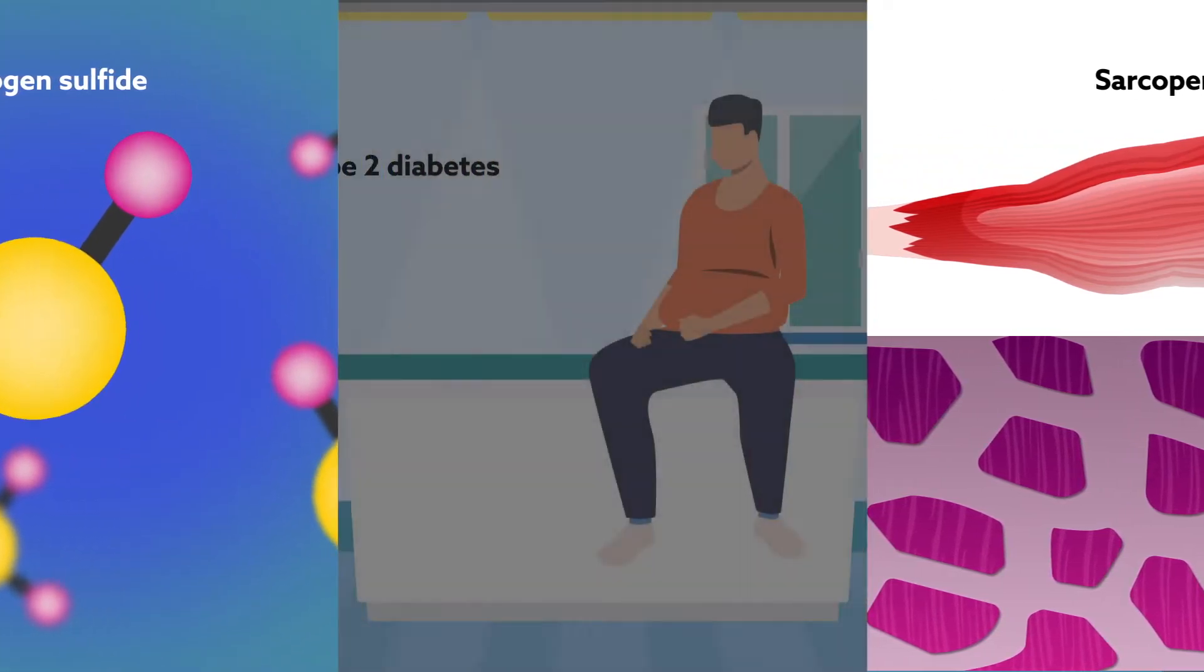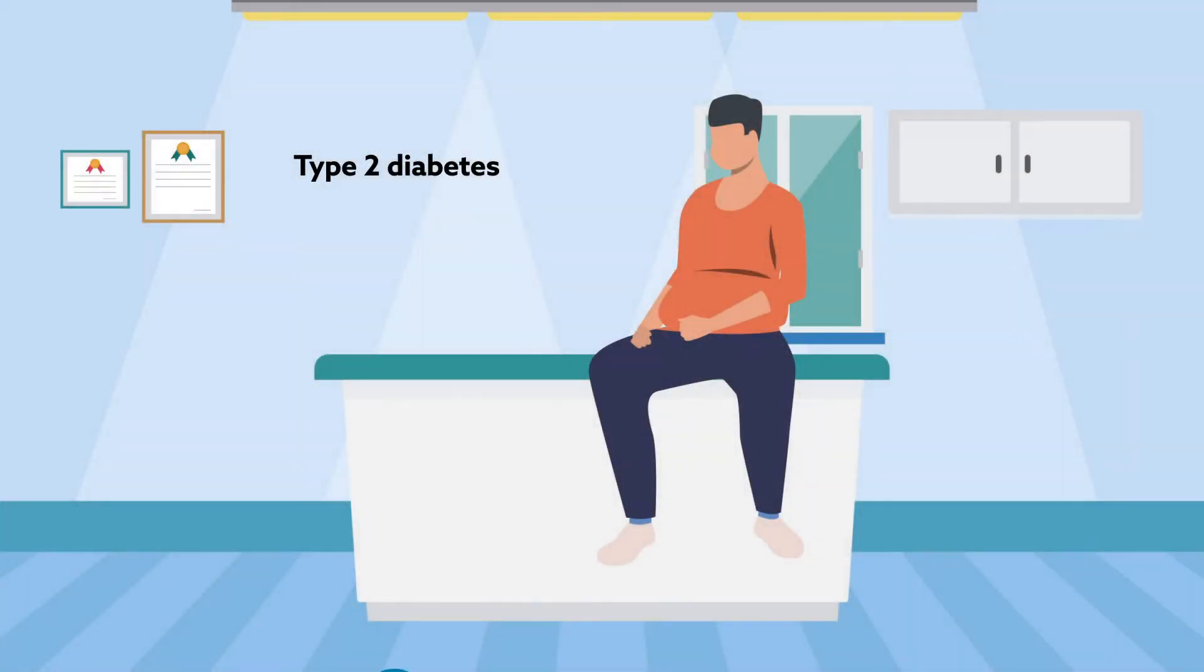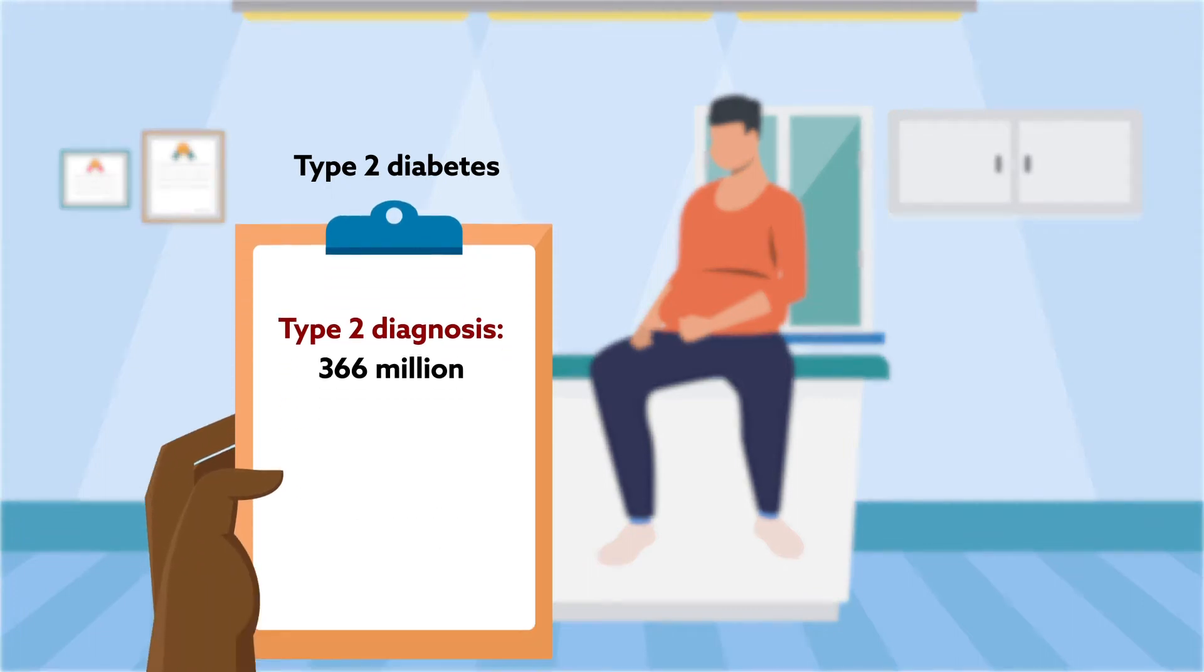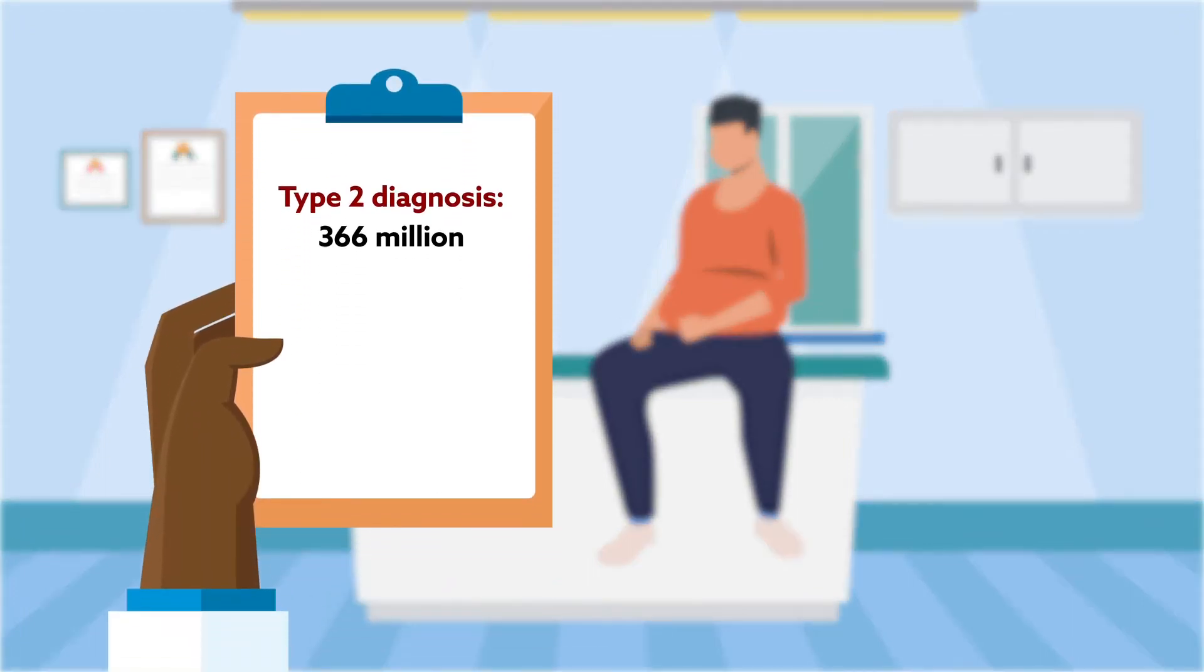Type 2 diabetes is one of the biggest health and development challenges of the 21st century. Currently, 366 million people live with type 2 diabetes, and another 280 million are at high risk. By 2030, those numbers are expected to double.